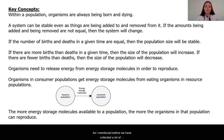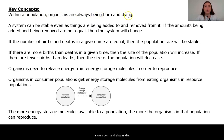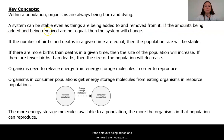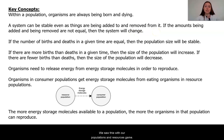We have collected a lot of evidence and figured out some really key ideas about how populations change or stay the same over time. We know that within a population organisms are always being born and always dying. This means that even when a population is staying the same, something is being added or taken away — it is just balanced. A system can be stable even as things are being added to or removed from it. If the amounts being added and removed are not equal, then the system will change. We saw this with our populations and resources game and with the tanks of water video.